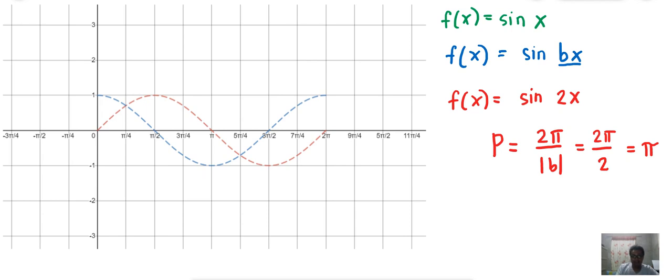Kung titignan natin dito sa graph natin, magkakaroon na tayo ng transformation dito hanggang dito na lang sa π. Kung parang iko-compress natin, from 0 to 2π yung dati, yung ngayon na, from 0 to π na lang. So from 0 to π, i-divide natin into 4. So eto na, 1, 2, 3, 4.